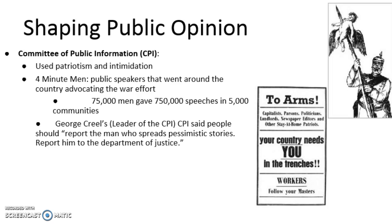Through the CPI's direction, you have independent organizations like the National Security League and the American Defense Society — interest groups and non-governmental organizations that actually aided the government in spying on their neighbors for those not seen as patriotic, and reporting those people to the government. You can pause this video and look at some symbolism and meaning in propaganda posters, or Google some and note important symbolism for World War I.